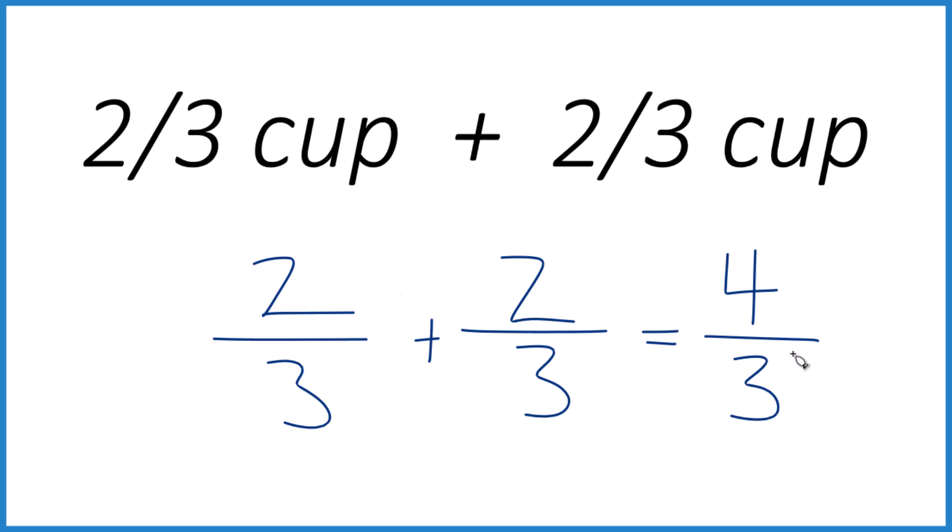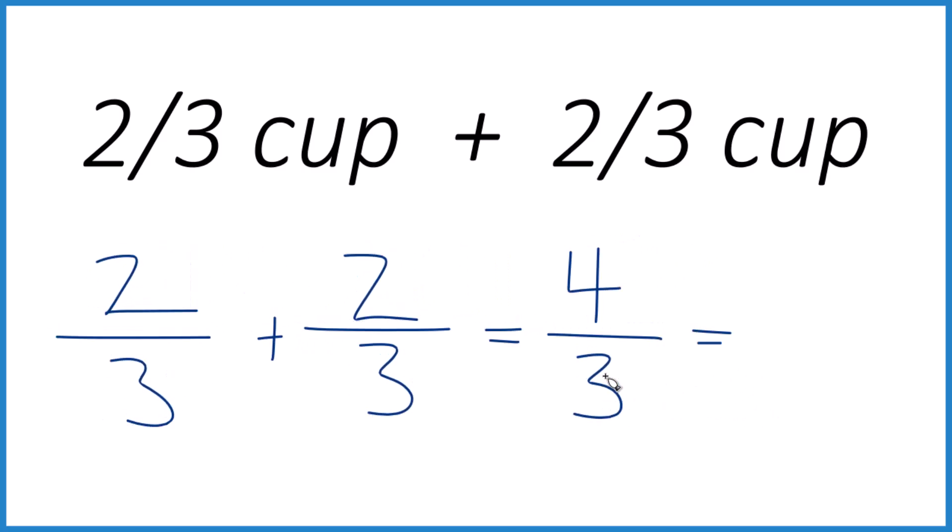Which probably most people don't have 4 thirds of a cup. So let's convert this to a mixed number. Let me move this over. So 3 goes into 4 one time with 1 left over, then we bring the 3 across.